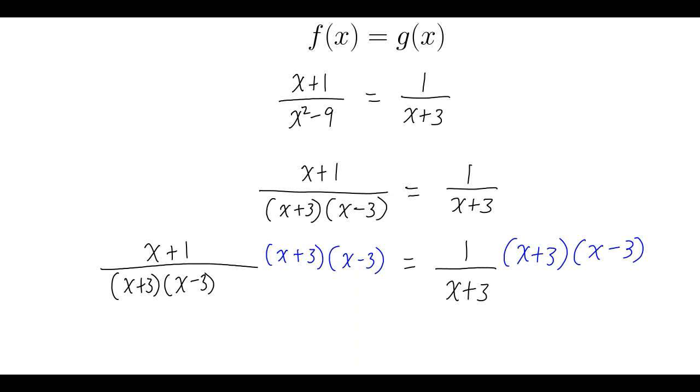The good thing about this is that this x plus 3 will cancel out with the x plus 3 on the bottom. This x minus 3 will cancel out with this x minus 3 on the bottom. I'm left with just x plus 1 on the left side. On the right side, this x plus 3 cancels out with this x plus 3. I'm left with 1 times x minus 3.